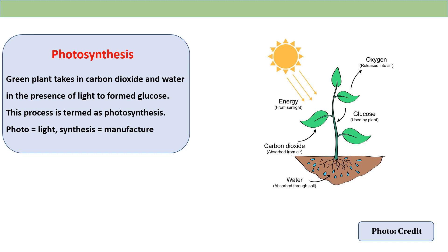In autotrophic nutrition, the green plant takes in carbon dioxide. Certain substances are required for photosynthesis to take place. In the presence of chlorophyll, chlorophyll absorbs light energy.